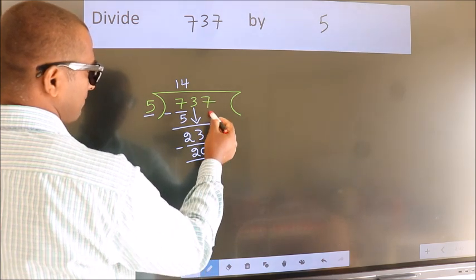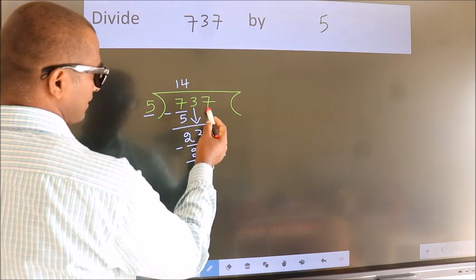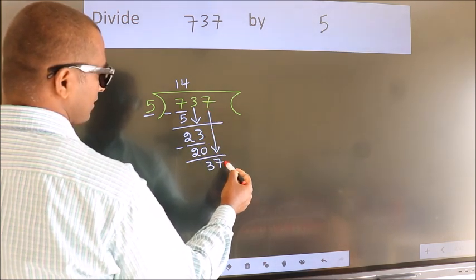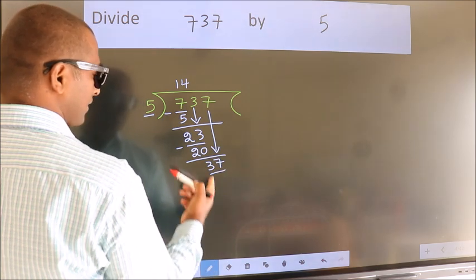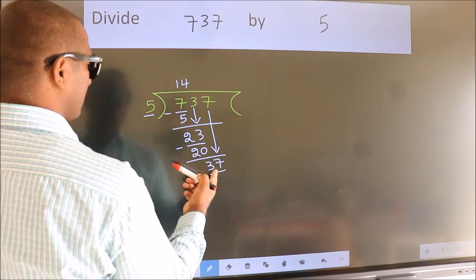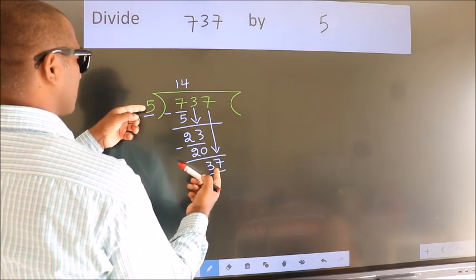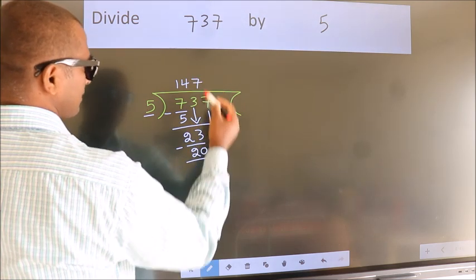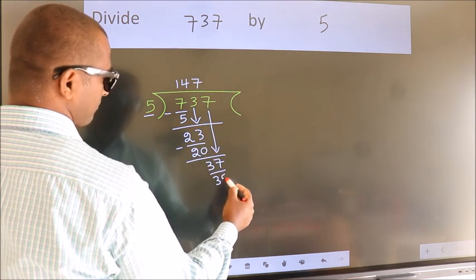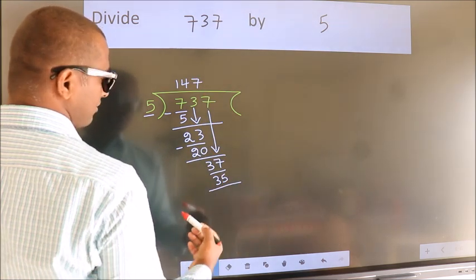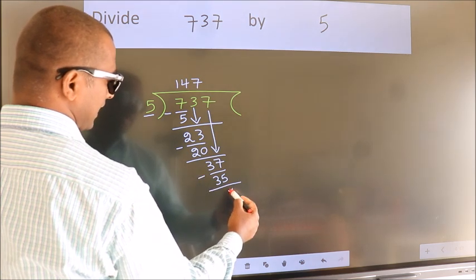After this bring down the beside number. So 7 down. So 37. A number close to 37 in the 5 table is 5 times 7 is 35. Now we subtract. We get 2.